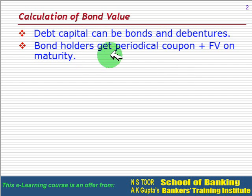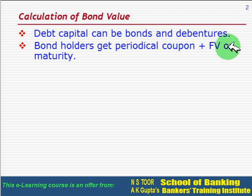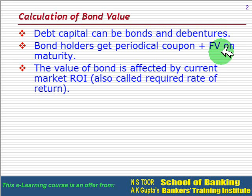The bond holder, till maturity, receives annual interest called the periodical coupon, and on maturity receives the face value of the bond. Valuation of the bond is based on these two cash flows — one in the form of an annuity, and the other in the form of a single cash flow.